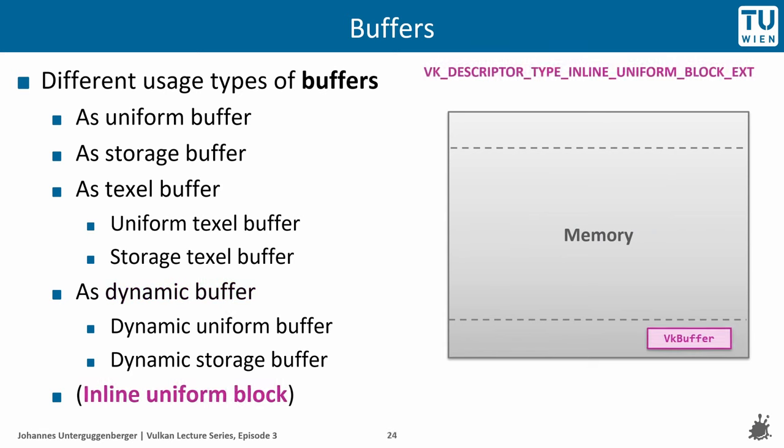Finally we have the InlineUniformBlock, which is just a very small piece of data, so that it can be stored inline in command buffers. It acts like a UniformBuffer but is not linked to a VkMemory instance and contains its data inline. That also means such a buffer is very restricted in terms of its size.